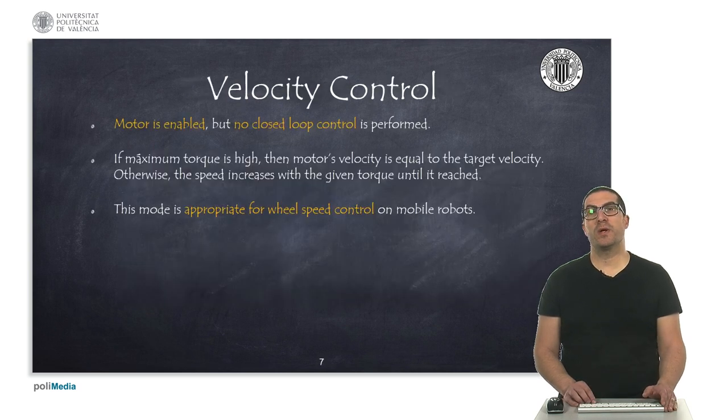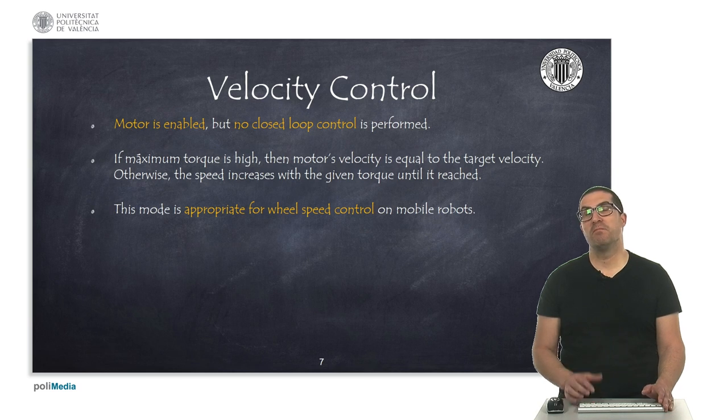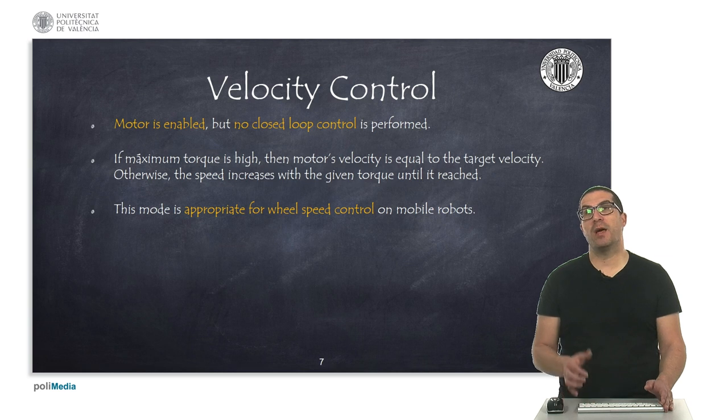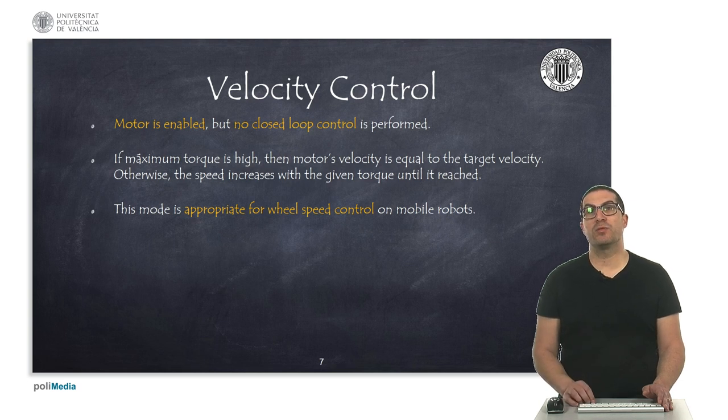Speed control is quite simple. If the maximum torque of the joint is high enough to move child objects, then the speed of the joint will be equal to the reference speed, and this happens instantaneously. If the force is not enough, then it will gradually increase until it can be reached, as long as the maximum torque allows it. This mode is suitable for speed control of wheels of a mobile robot or even for instance a kinematic control of an articulated robot arm.